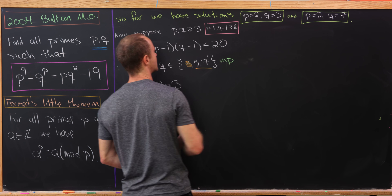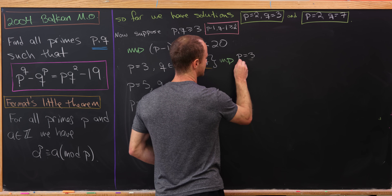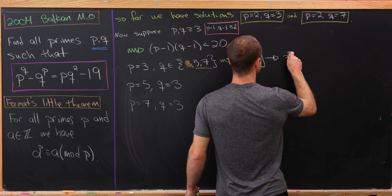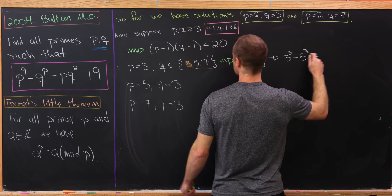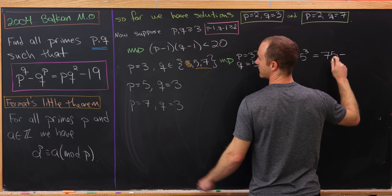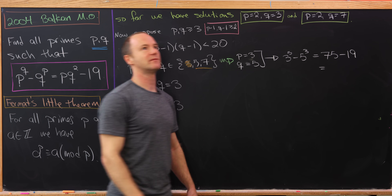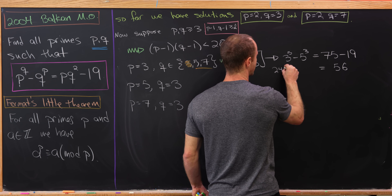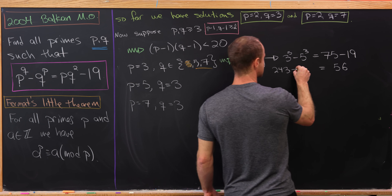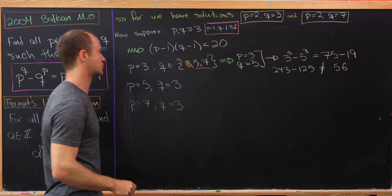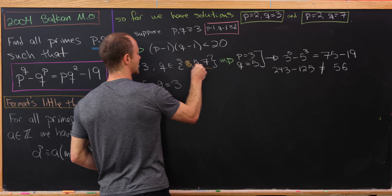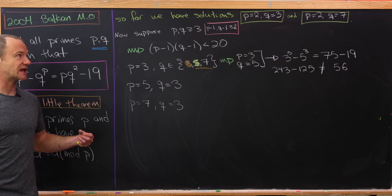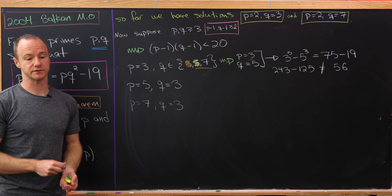Checking each case individually: for p equals 3, q equals 5, we get 3^5 minus 5^3 equals 243 minus 125 equals 118, but 3(25) minus 19 equals 56. These are not equal, so this is not a solution. Checking the remaining cases one at a time, none of them yield a valid solution either. Therefore, our only solutions are the two found earlier: (p, q) = (2, 3) and (p, q) = (2, 7).